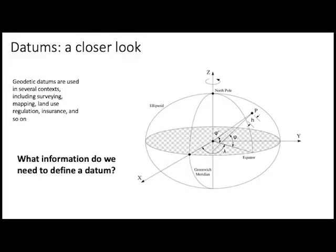We need to understand the idea of a geodetic datum, which is basically a reference frame for a coordinate system. If we think about the Earth at the very largest scale, we need to have a surface — we have to measure things on the surface of the Earth. So we're going to approximate the Earth's surface with an ellipsoid, which is a perfect mathematical shape like a sphere but squashed on one axis. The Earth is a little bit wider at the equator than at the poles, because of the Earth's rotation.